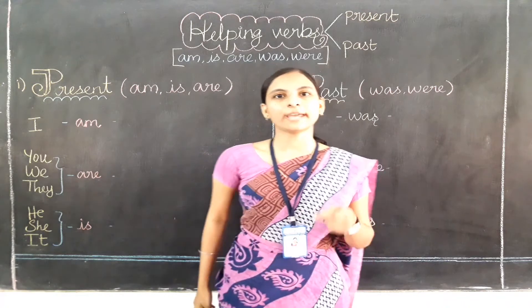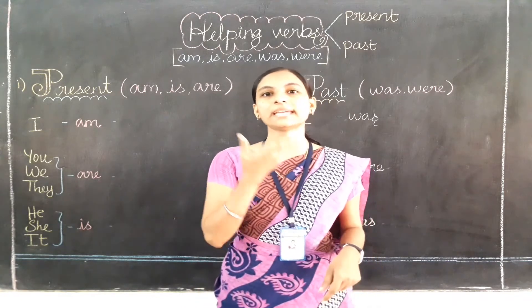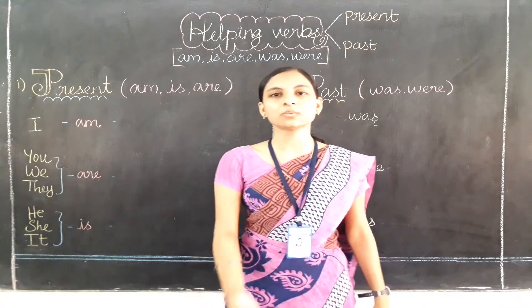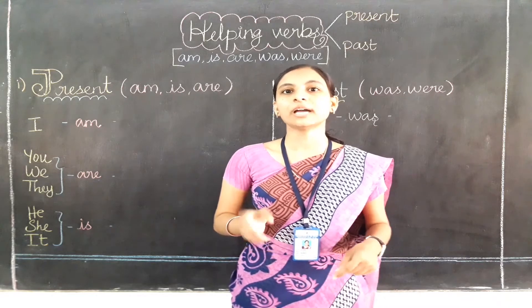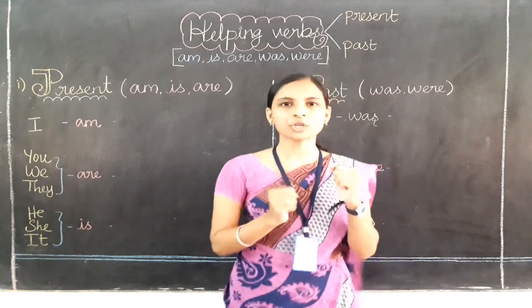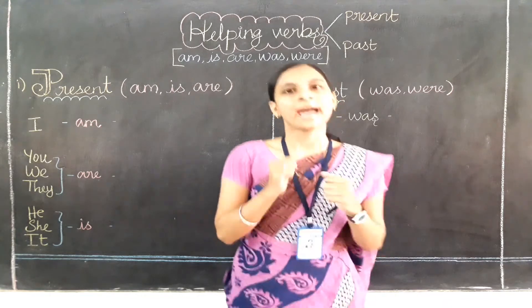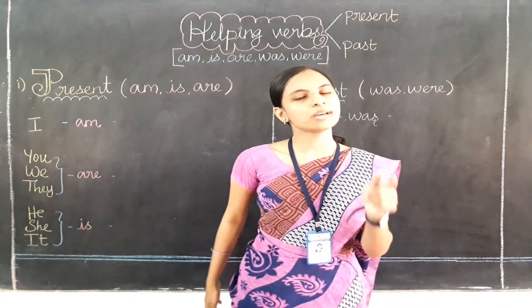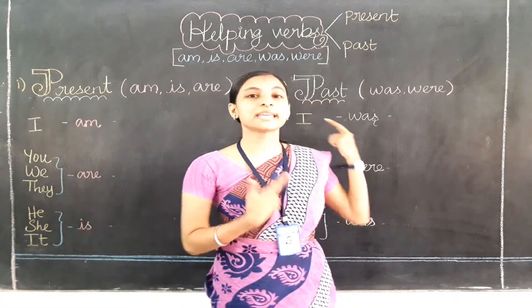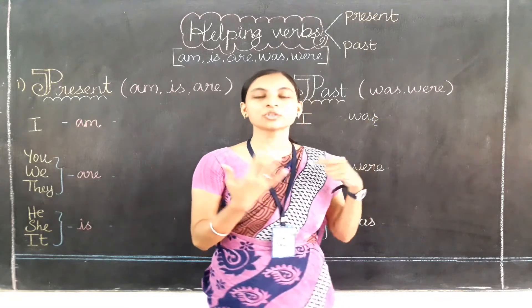For example, I am walking — I am using 'am' with the main verb. I am walking means what I am doing now. Now I am jogging. But before jogging, what was I doing? I was walking. 'Was' tells the past time because before jogging, I was walking. Here I am using 'was' to show the past time.